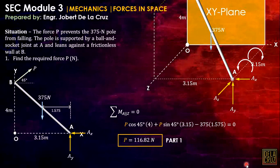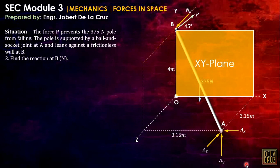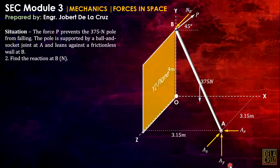Moving to part 2: find the reaction at B, which is NB. We need to choose a plane to see force B. We can look at the ZY plane or the XZ plane (top view). The prepared solution looks at the YZ plane.